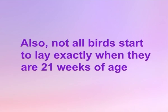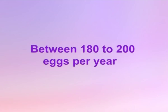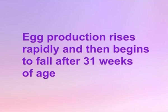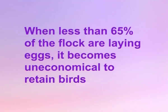Production planning: on an average, a bird tends to produce one egg per day. Not all birds start to lay exactly when they are 21 weeks of age. Planning is therefore necessary for egg production to be constant so as to cater to market demand. In areas where the climate is hot and humid, commercial hybrid laying birds produce on an average between 180 to 200 eggs per year. In temperate climates, birds can produce about 250 to 300 eggs per year. Egg production rises rapidly and then begins to fall after 31 weeks of age. When less than 65% of the flock are laying eggs, it becomes uneconomical to retain birds.